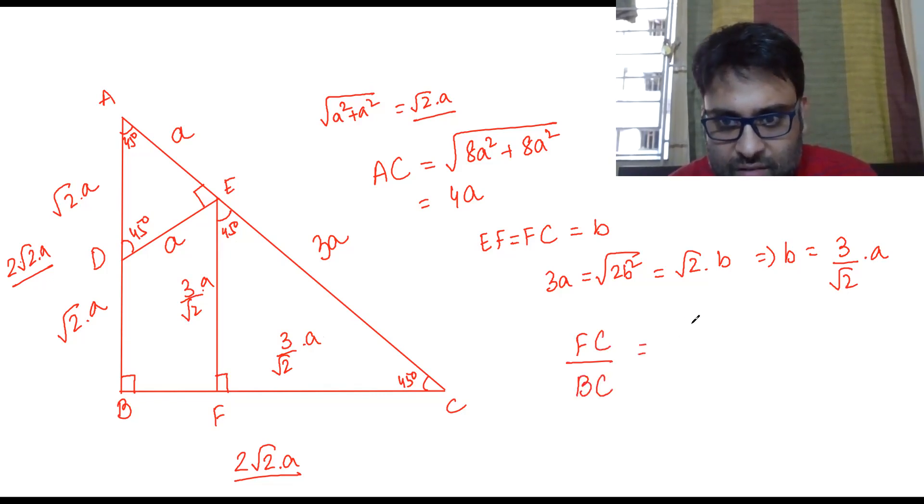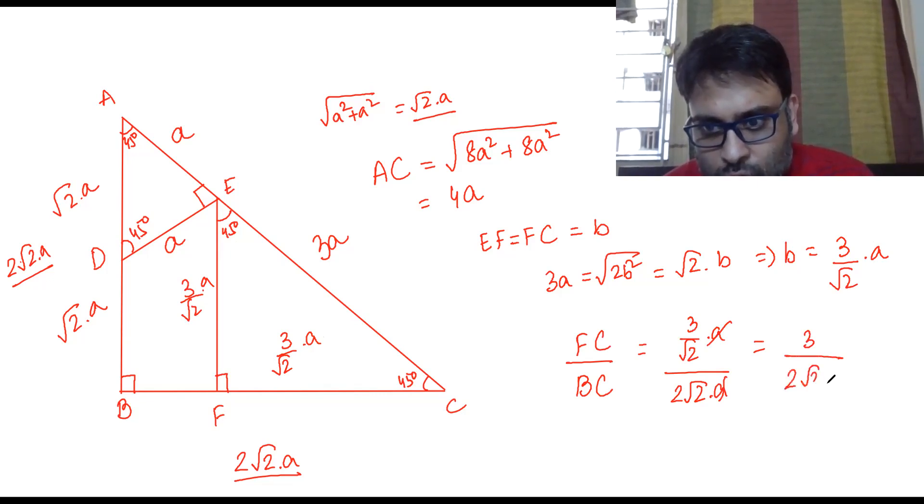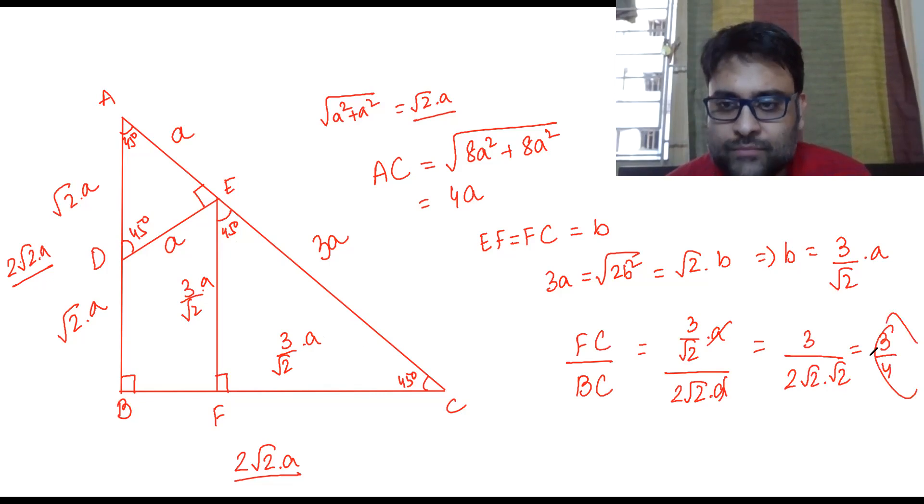FC is 3 by root 2 times a, BC is 2 root 2 times a. This cancels out to 3 by 2 root 2 times root 2, which simplifies to 3 by 4.